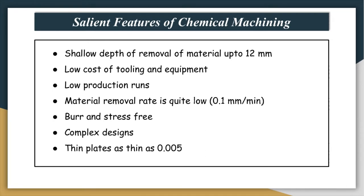Now I will discuss some salient features of chemical machining. First, this process is applicable for shallow depth of material removal — up to 12 millimeters as an upper limit. Also, there is very low cost of tooling and equipment for this process.